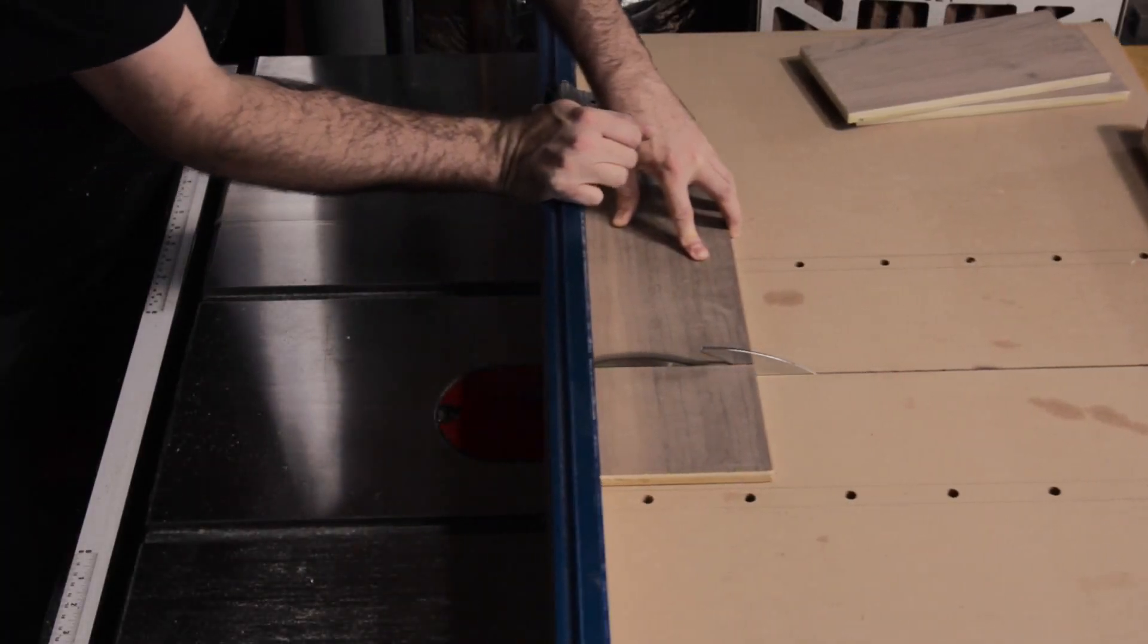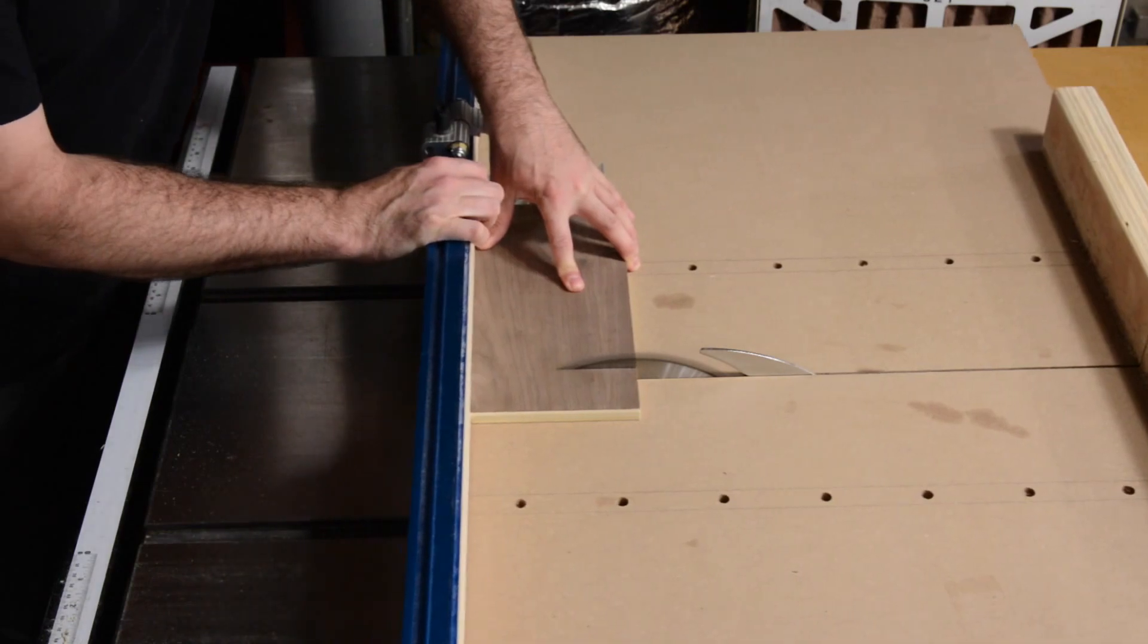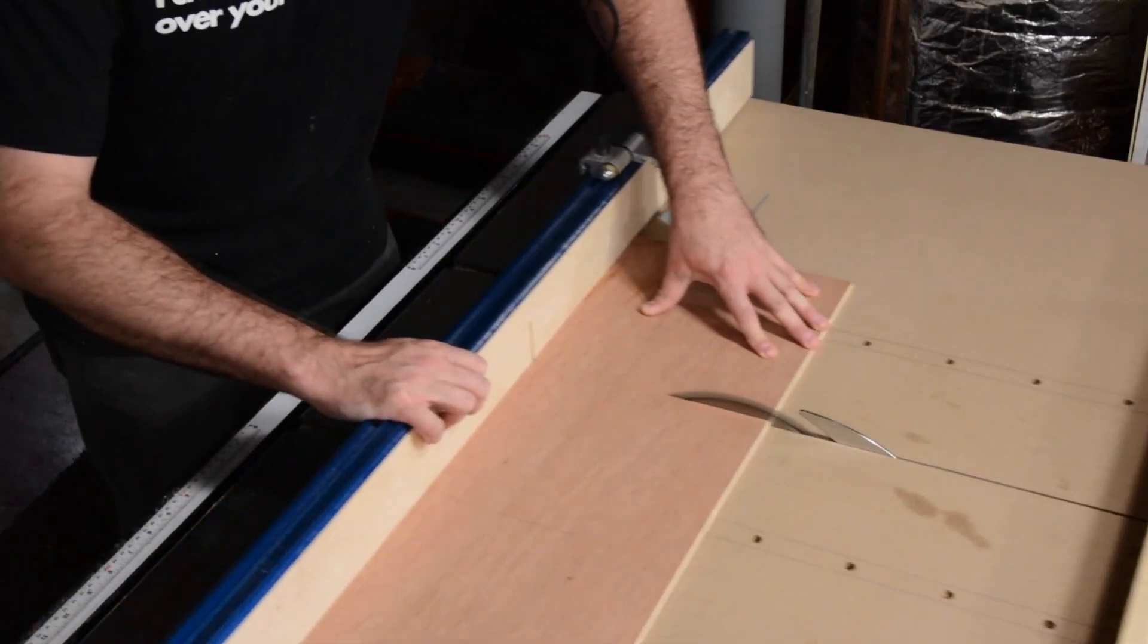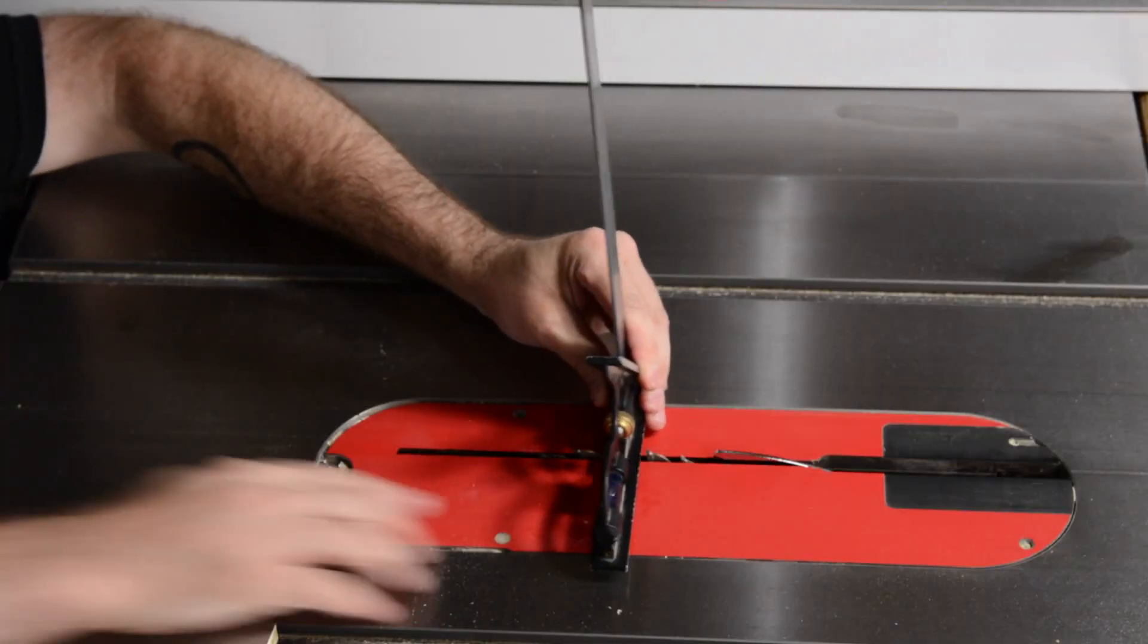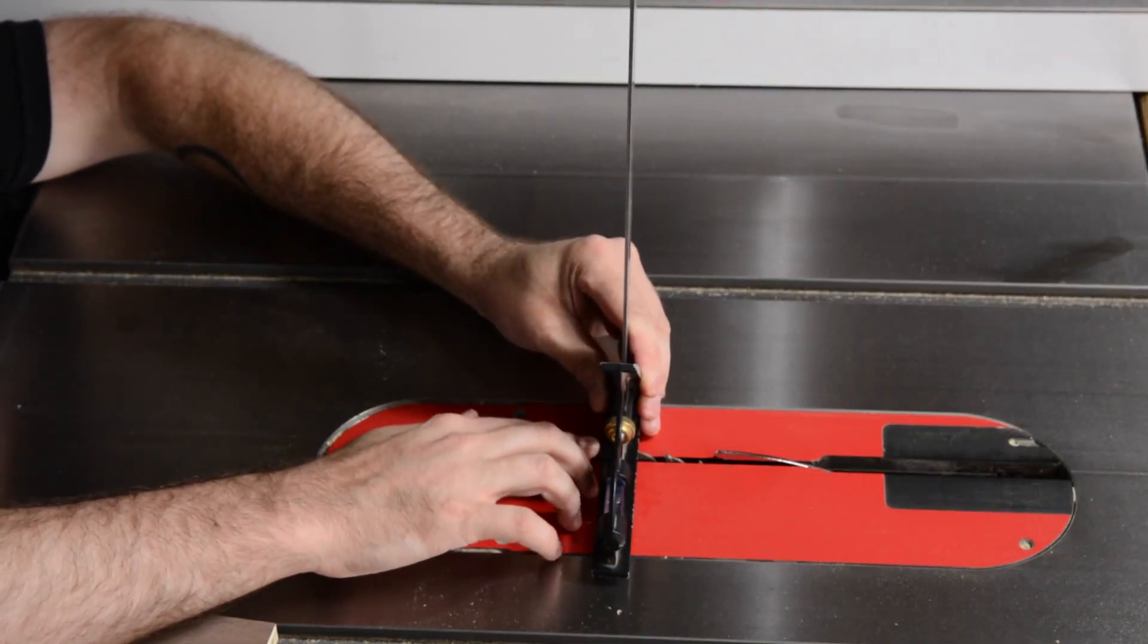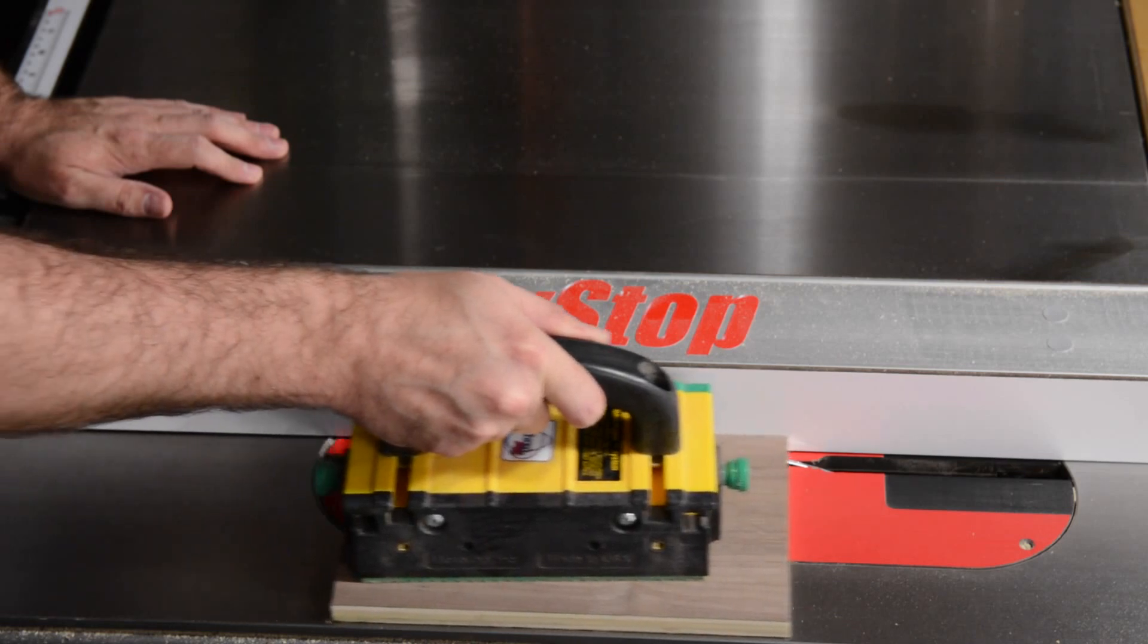First thing I do is cut the four sides and the bottom piece to size. I lower my table saw blade to a quarter inch and cut the grooves into the two sides where my plywood bottom will fit into.